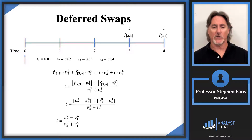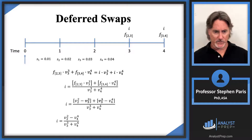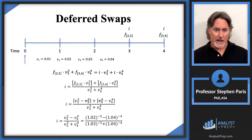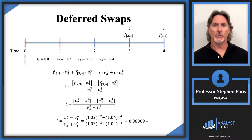By taking that one extra symbolic step — recognizing that the forward rate times the discount factor reduces to a difference in corresponding v-values — I get a telescoping sum that simplifies the expression considerably for numeric calculation. Plugging in the values for v₂, v₃, and v₄ and going through the computation gives a swap rate of approximately 6.009% for this two-year deferred two-year interest rate swap.